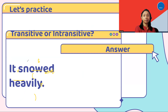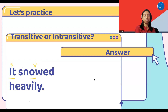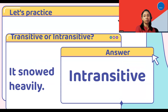Next sentence: It snowed heavily. It is the subject, snowed is the verb. Do we have any object here? 'Heavily' cannot be an object because it is an adverb, not a noun, and objects are mostly nouns. So you cannot ask a question with 'what,' 'whom,' or 'who' here. Therefore, snowed is an intransitive verb.